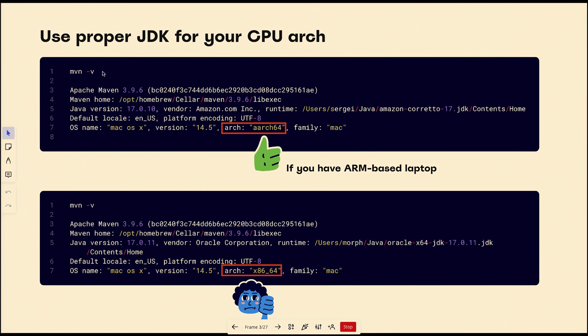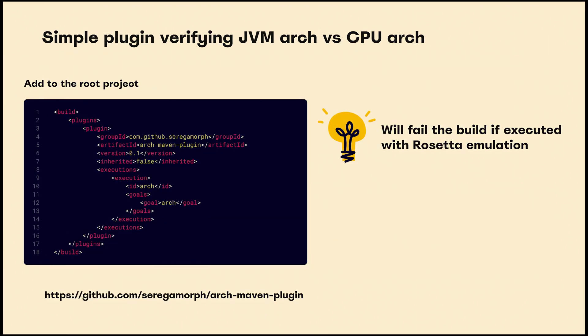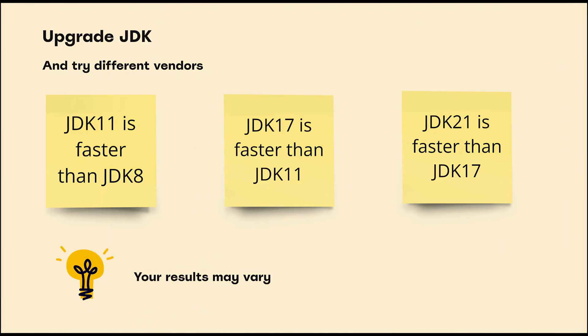There is a simple command, mvn -v, and you can check if the proper JVM is used or if it's x86, meaning Rosetta mode. You can even automate this validation with a simple plugin, shell script, or an existing one, which will just break the build to avoid performance overhead. Note that Rosetta emulation consumes 40% of CPU and even more, so it's a pretty big overhead.